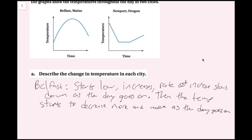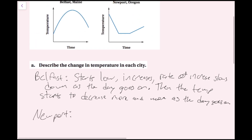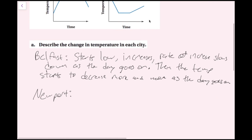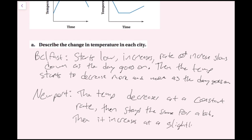Now for Newport: looking back at the graph, the temperature decreases at a constant rate, then it stays the same for a bit, then it increases at a slightly slower rate.